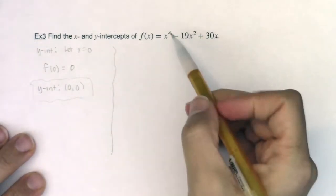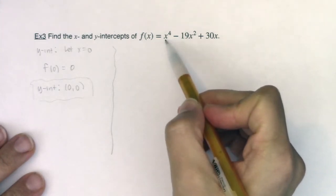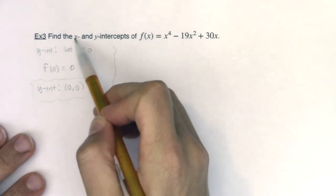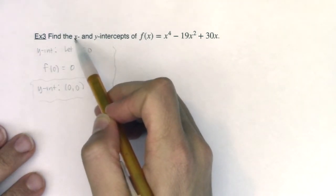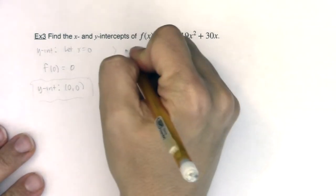The x-intercepts are a little bit trickier. I have an x to the fourth, so I have a degree 4 polynomial, which means at most I'm going to find four zeros. I could find fewer than that, but I'm going to find at most four.